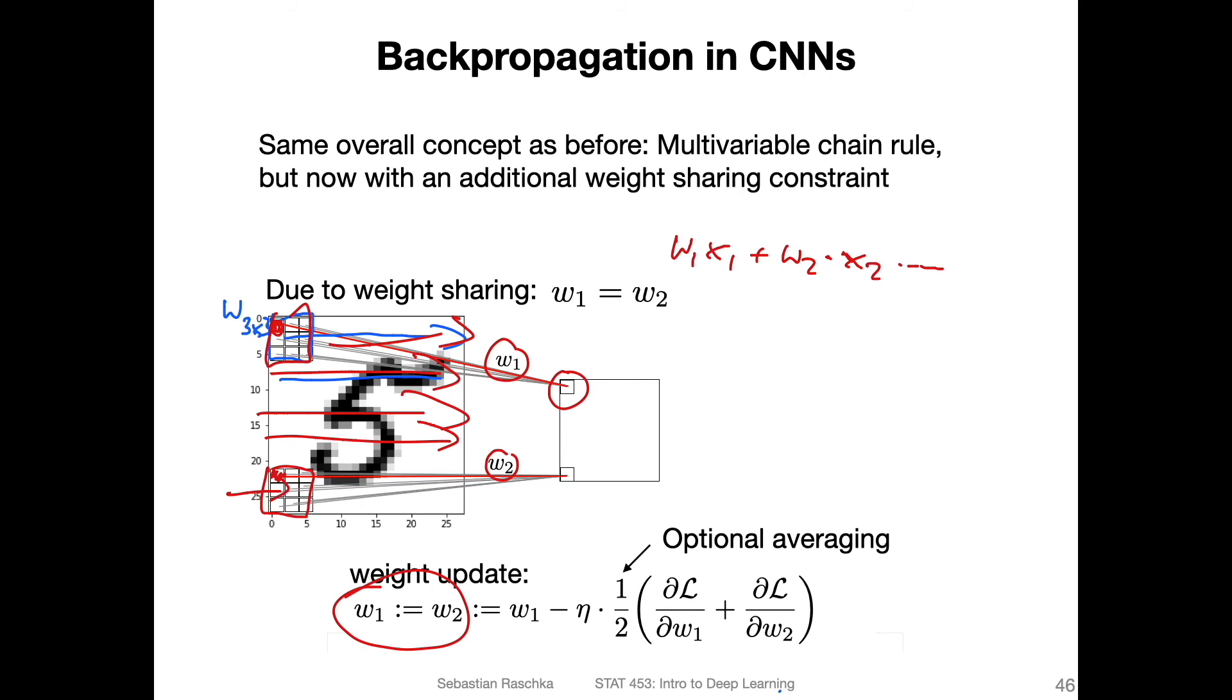And in that way, it's essentially the multivariable chain rule. So when we compute the partial derivative of the loss with respect to w1, we compute that in two parts: once for the upper path here, and once for the lower path. And there might be differences, of course,